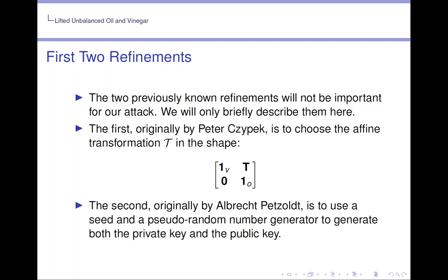The first, originally by Peter Špaček, is to choose the affine transformation T in this shape, which is as follows, where I_v is the identity matrix whose diagonal is length v, and similar for I_o.